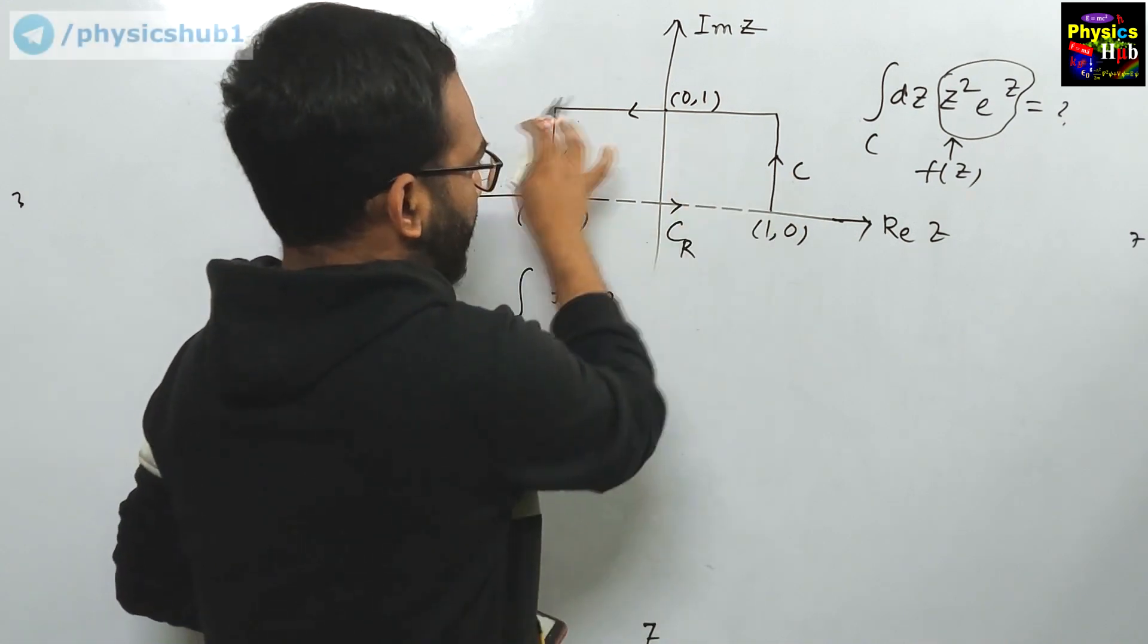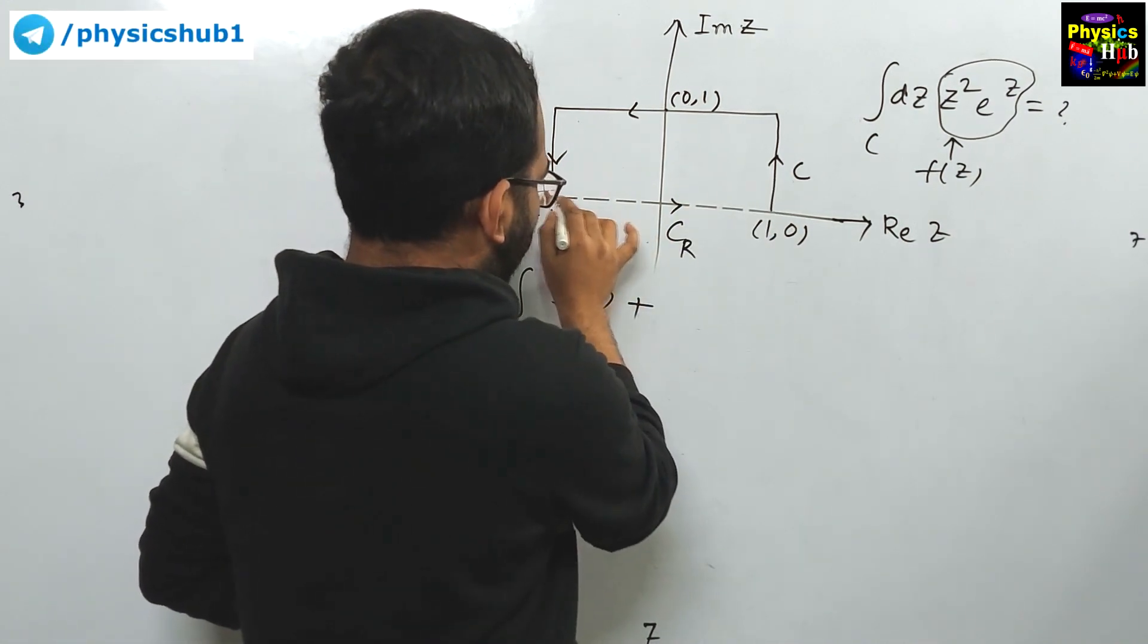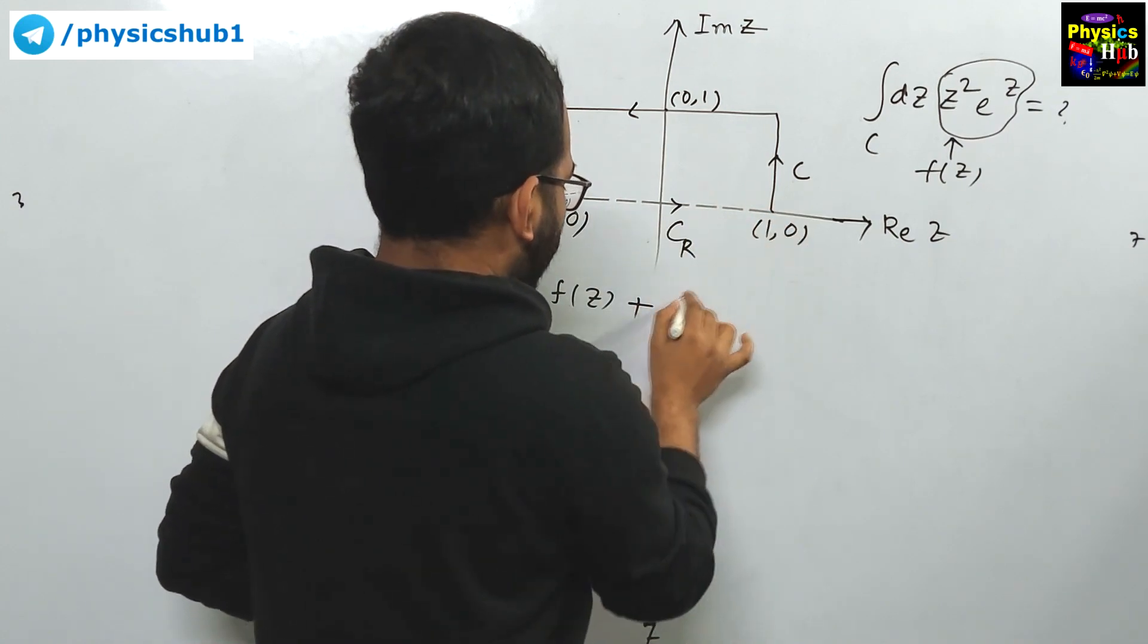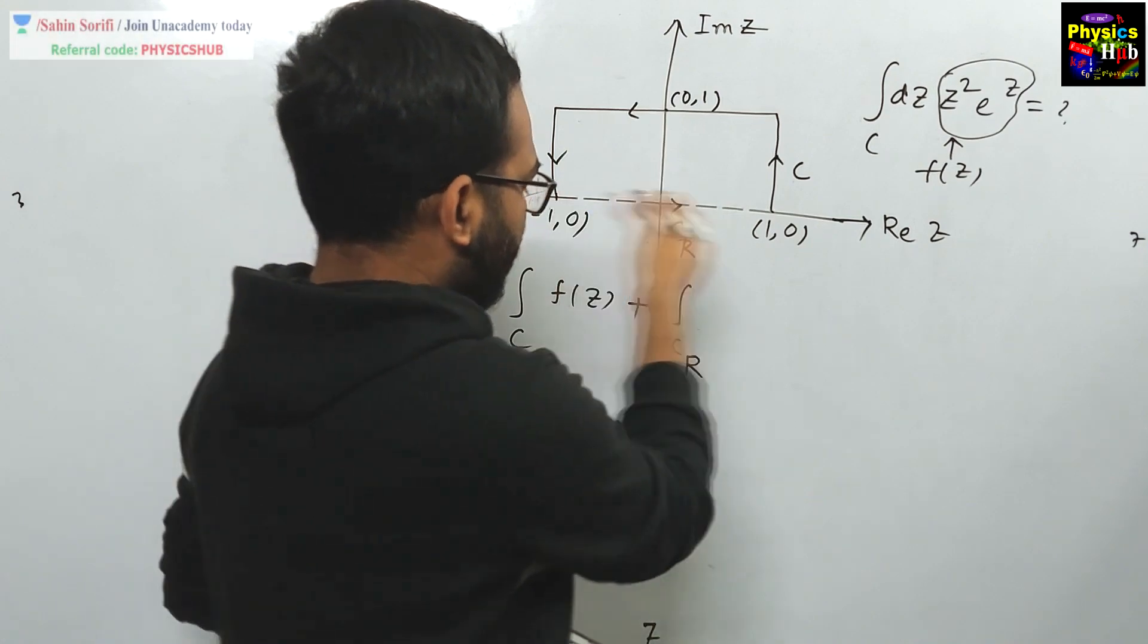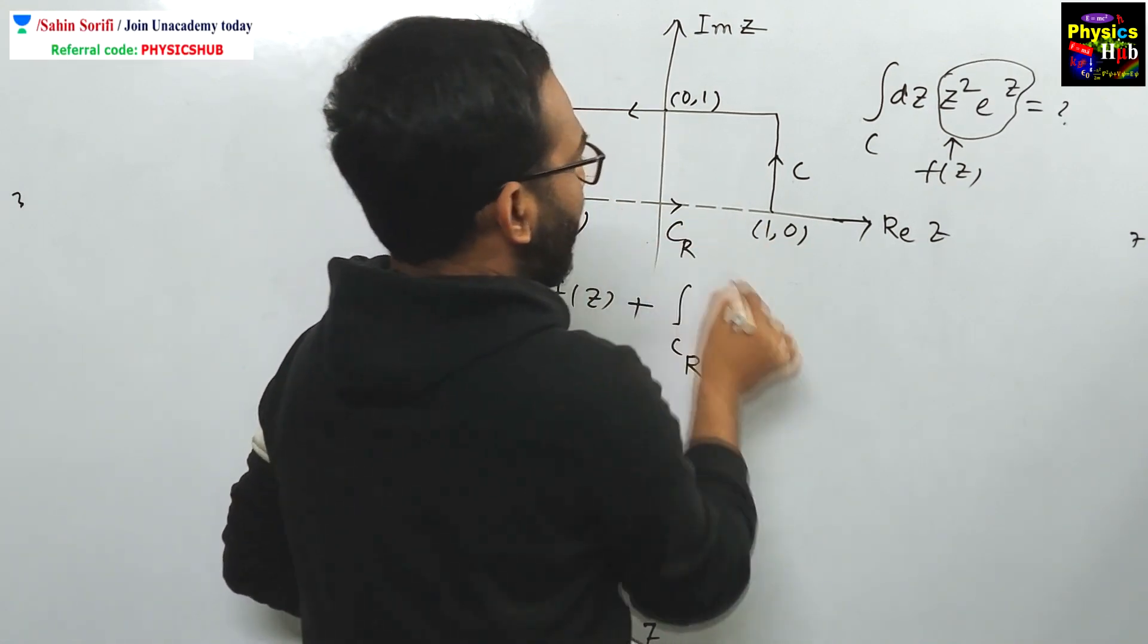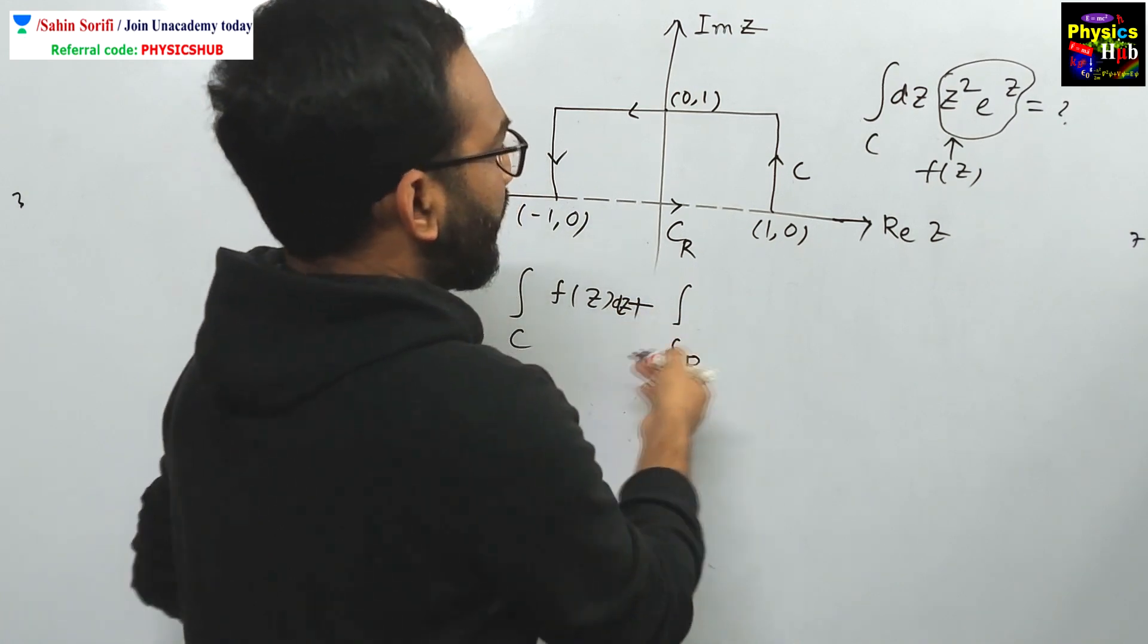The upper contour plus we are completing the contour in this way. We are denoting it by Cr, r for real, along the real axis we are going. Along the real axis, this dz will be there.